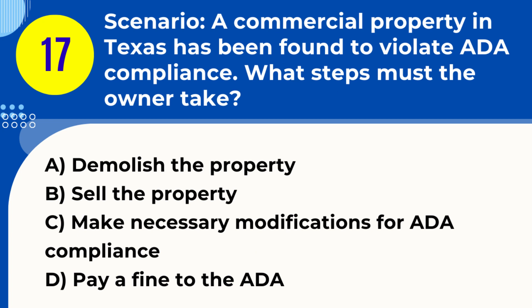Question 17. Scenario: A commercial property in Texas has been found to violate ADA compliance. What steps must the owner take? A. Demolish the property. B. Sell the property. C. Make necessary modifications for ADA compliance. D. Pay a fine to the ADA. Answer: C. Make necessary modifications for ADA compliance. Explanation: If a commercial property in Texas violates ADA (Americans with Disabilities Act) compliance, the owner is required to make necessary modifications to meet ADA standards.